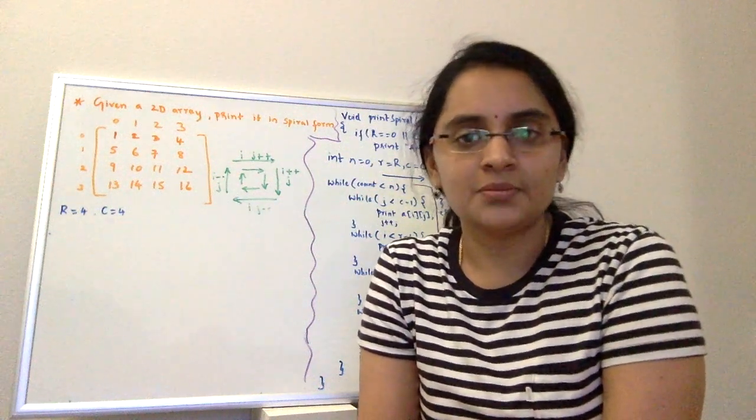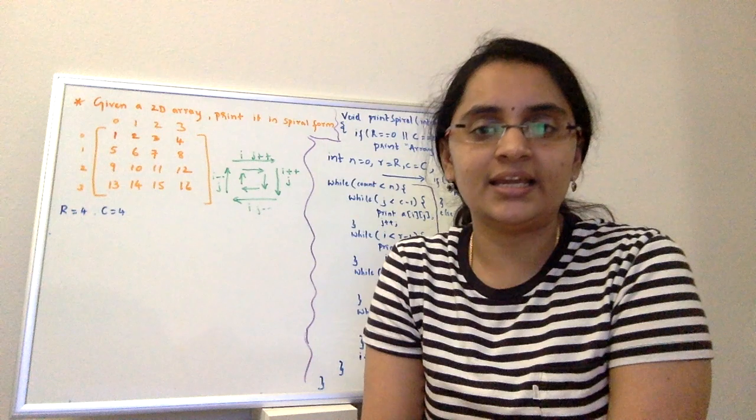Hi, now I want to solve a problem which is printing a 2D array in a spiral form.